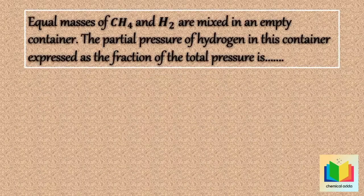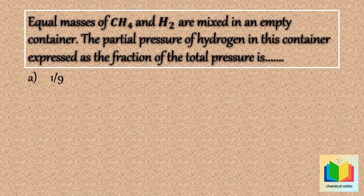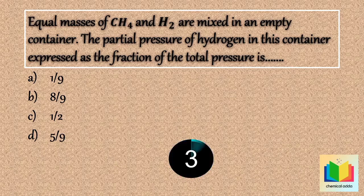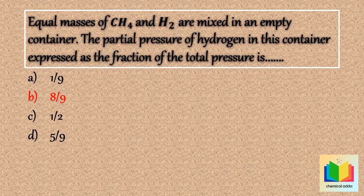Equal masses of CH4 and H2 are mixed in an empty container. The partial pressure of hydrogen in this container, expressed as the fraction of the total pressure, is — option A: 1/9, option B: 8/9, option C: 1/2, option D: 5/9. The answer is option B: 8/9.